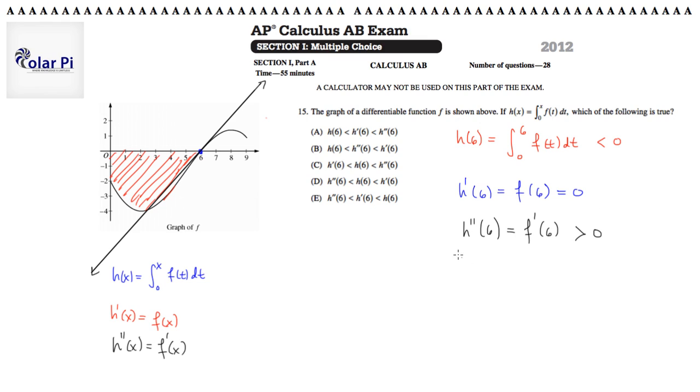Oh, got it. So since h double prime of 6 is greater than 0, h prime of 6 is equal to 0, and h of 6 is less than 0, the order in which these guys should be ordered should be in this following one. The h of 6, which is negative, is clearly less than h prime of 6, which is 0, which is clearly less than h double prime of 6, which is positive. So whichever one says this is the correct answer. h of 6 is less than h prime of 6 is less than h double prime. Boy, a lot of a's here. So a, got it.